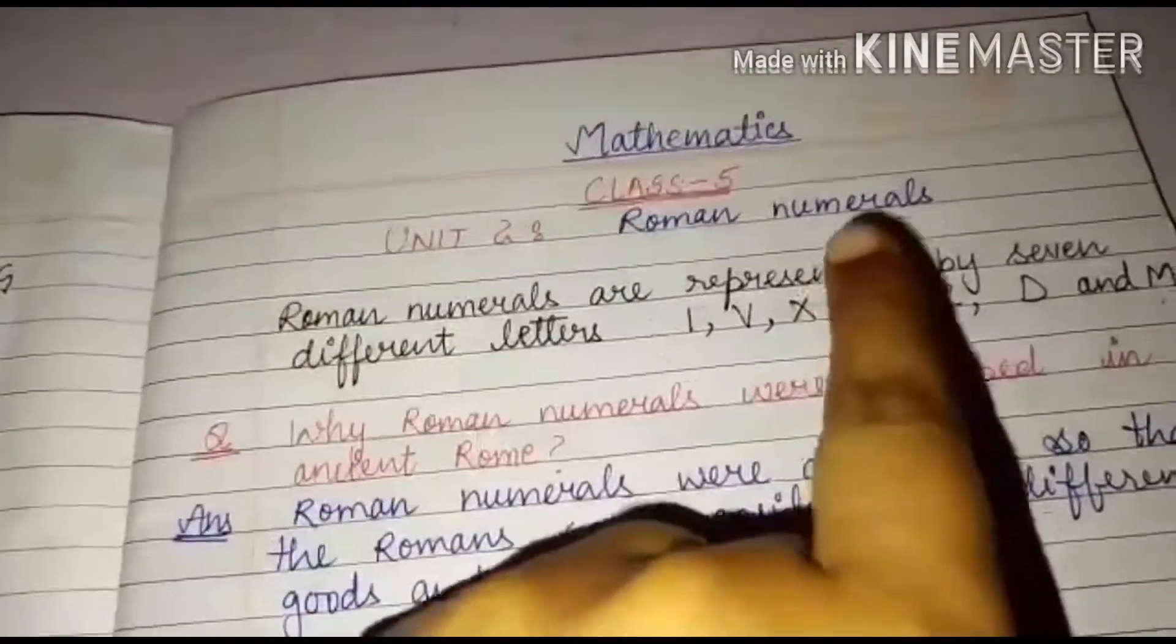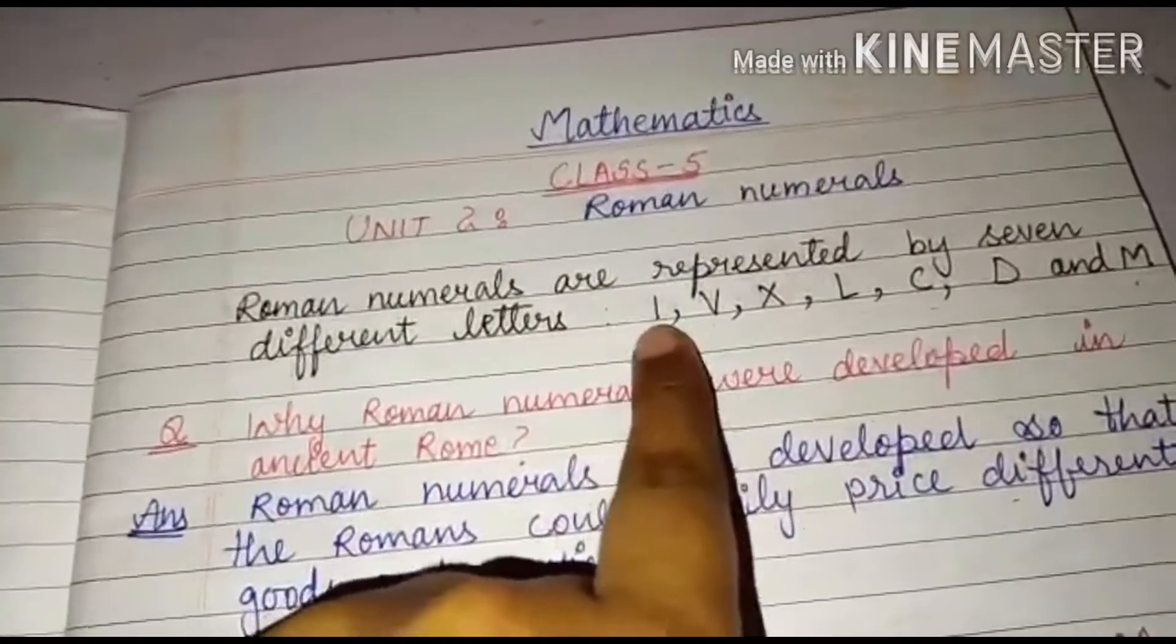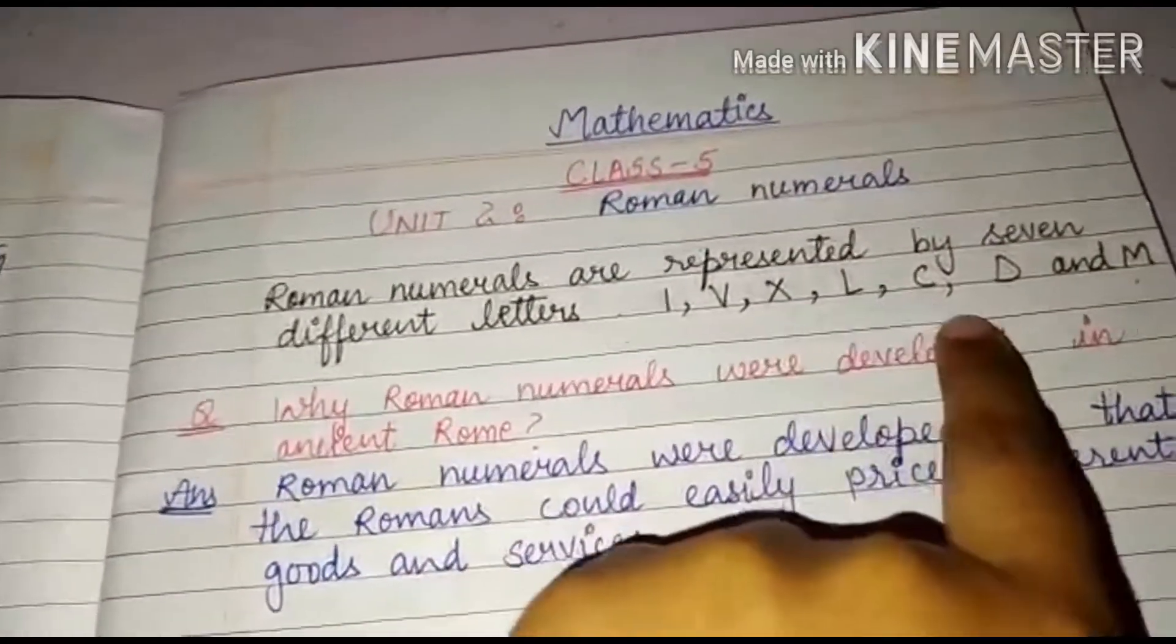So Roman numerals are represented by seven different letters that are I, V, X, L, C, D and M.